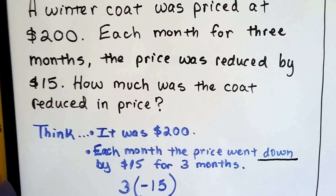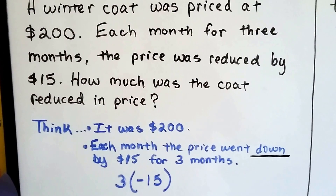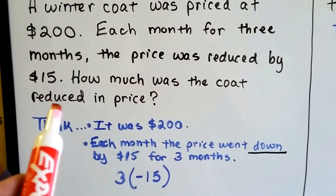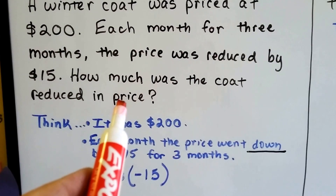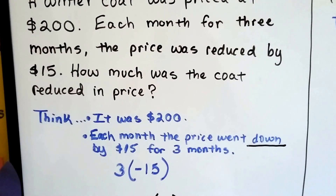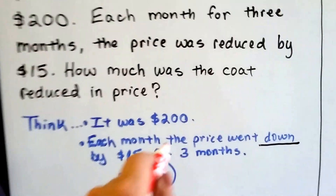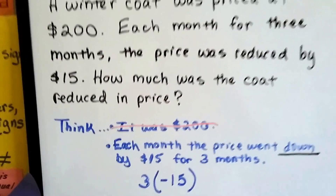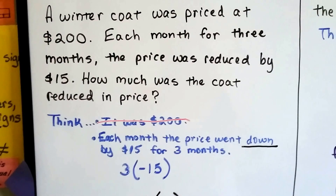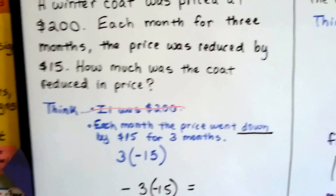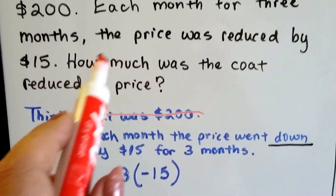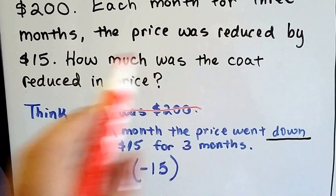So we think — it was $200. Is that important? Do we need to know that it was $200? What is it asking of us? It wants to know how much the coat was reduced in price. Is it asking us what the final sale price is? No. It's asking us how much was taken off of the price. So that's not even important, is it? Isn't that tricky? We have to be careful when reading word problems — sometimes they stick in numbers to sidetrack and trick us. But it is important that each month the price went down by $15 for three months.